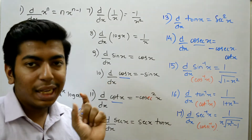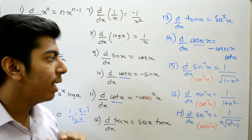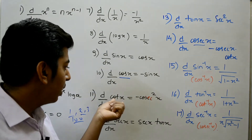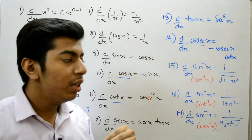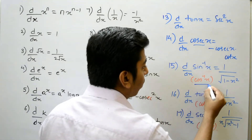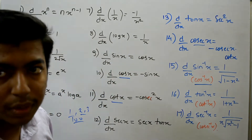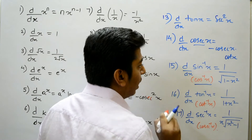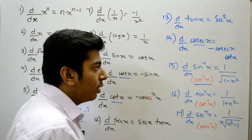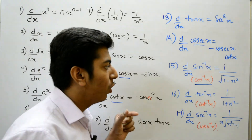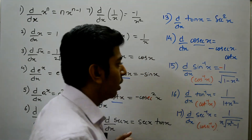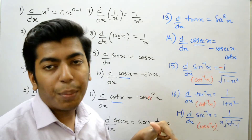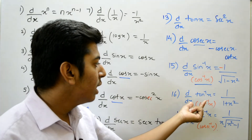The derivative of sin inverse x is equal to 1 upon under root of 1 minus x squared. For the derivative of cos inverse x, applying the same 'c' trick — since cos starts with c, a negative sign is added. So the derivative of cos inverse x is minus 1 upon under root of 1 minus x squared.